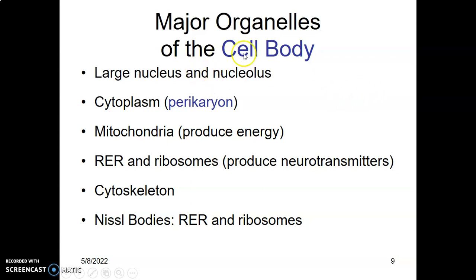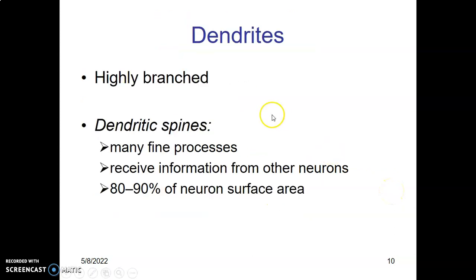The major organelles within the cell body include a large nucleus with a nucleolus. The cytoplasm of the neuron is called the perikaryon. Mitochondria produce energy needed for transmission of the action potential. Rough endoplasmic reticulum and ribosomes together are called Nissl bodies, which produce proteins in the form of neurotransmitters. Dendrites are the highly branched portions connected to the cell body; made up of many fine processes, they increase surface area and account for 80 to 90 percent of the neuron's surface area.